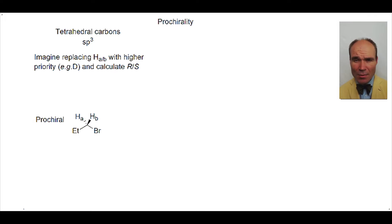Let's consider what would happen if either of these hydrogens was raised in priority to say a deuterium. First we will imagine the consequence for the descriptor of HA being changed to deuterium. The resulting stereogenic center is S. Thus HA is described as Pro-S.